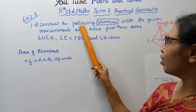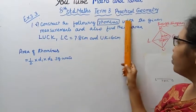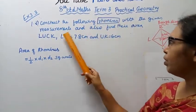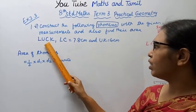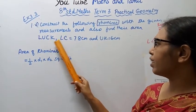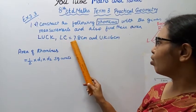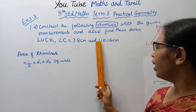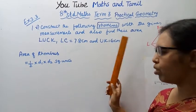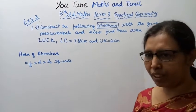Construct the following rhombus with the given measurements and also find the area. The rhombus is L-U-C-K. LC is equal to 7.8 cm and UK is equal to 6 cm.